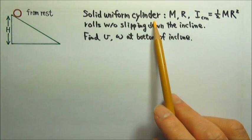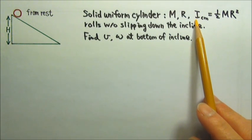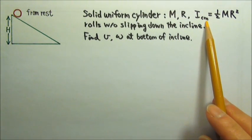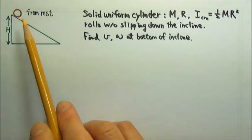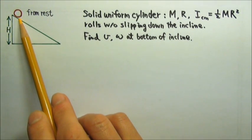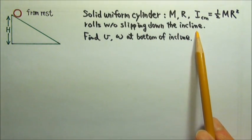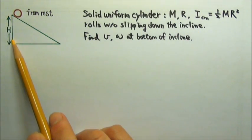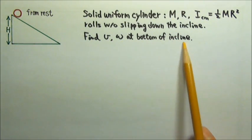A solid uniform cylinder has mass m, radius r, and a rotational inertia about an axis that goes through its center of mass, 1/2 mr². It is released from rest at the top of an incline, and then rolls without slipping down the incline. If this height is h, find the cylinder's speed and angular speed at the bottom of the incline.